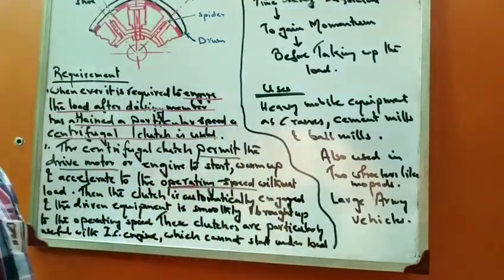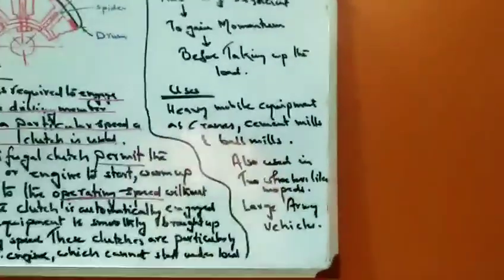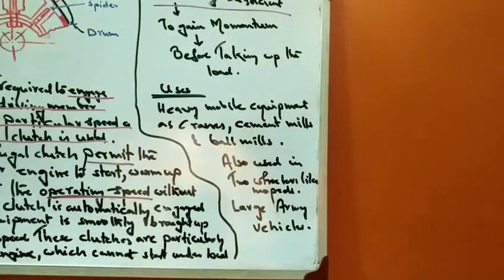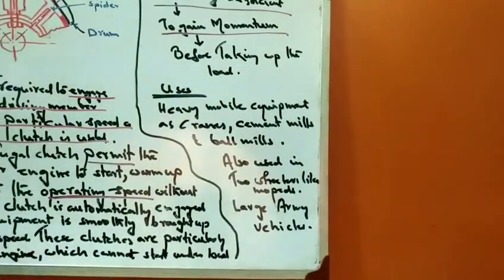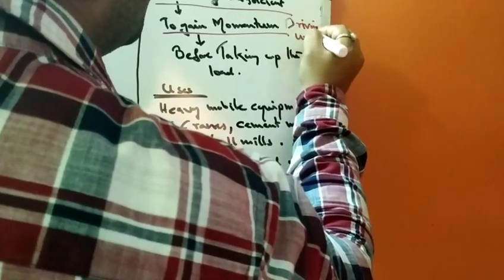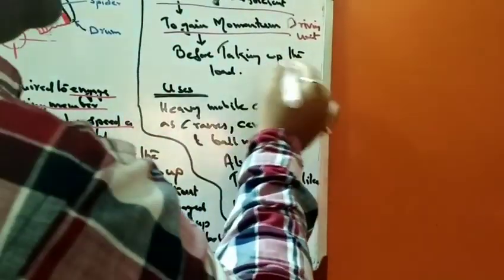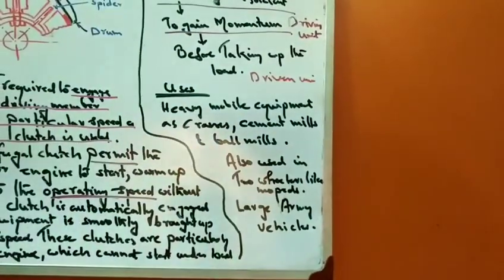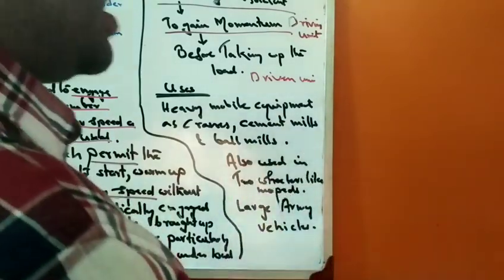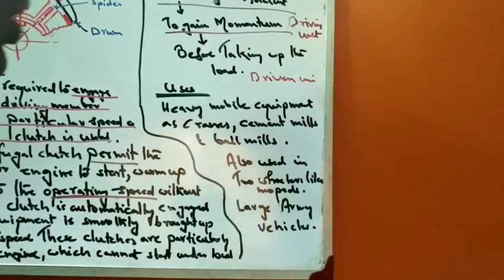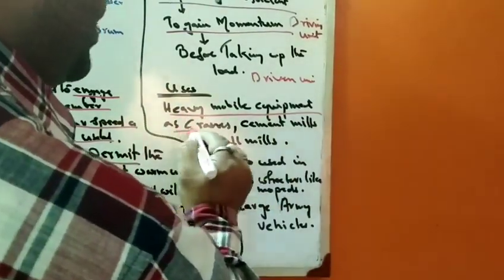Basically, the centrifugal clutch performs three things: it allows sufficient time delay for the driving unit to gain momentum before taking up the load — that is, before connecting to the driven unit. It allows the prime mover, which could be a motor or an engine, to gain momentum, and then allows the driven unit or load to get connected with it.